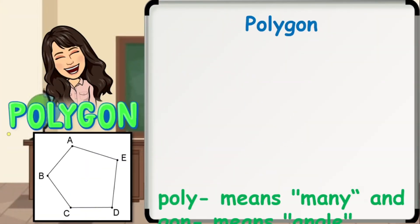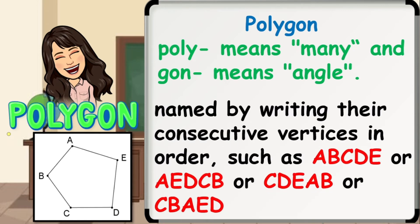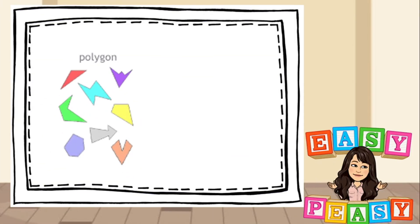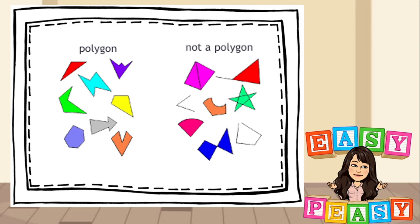Polygon comes from the Greek word — poly means many and gon means angle. A polygon is a union of non-collinear segments, which are the sides, on a plane that meet at their endpoints, which are the vertices, so that each endpoint or vertex is contained by exactly two segments or sides. Polygons are named by writing their consecutive vertices in order, such as ABCDE, AEDCB, CDEAB, or CBAED and so on for the figure on the left. Again, these are examples of polygons and these are examples of non-polygons.